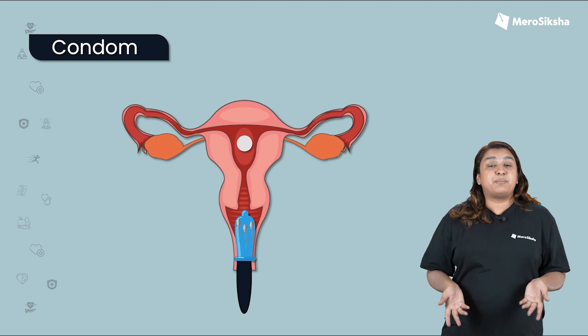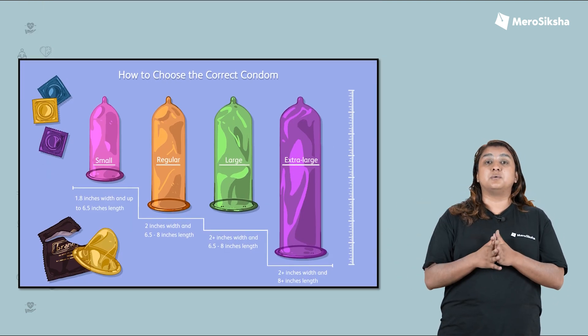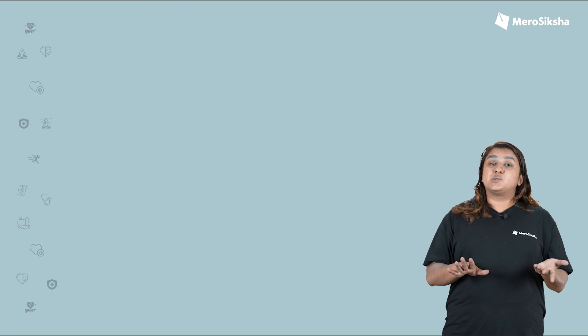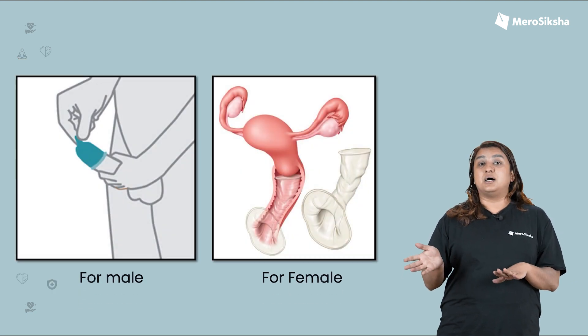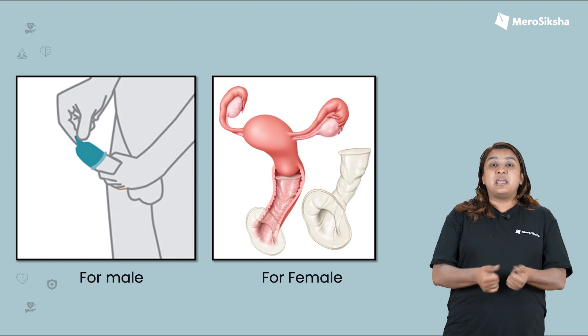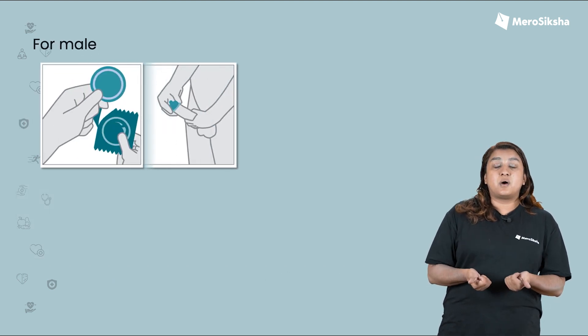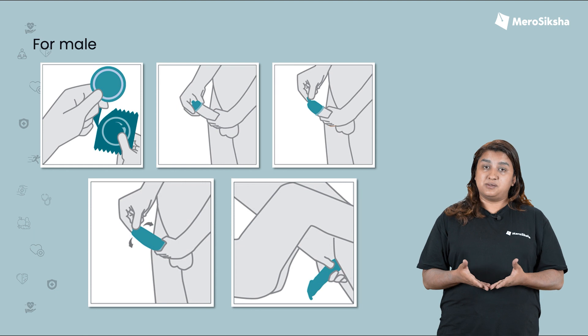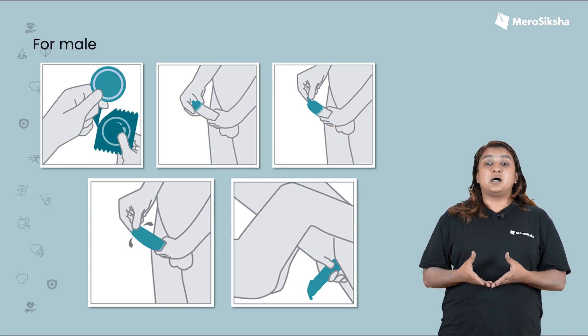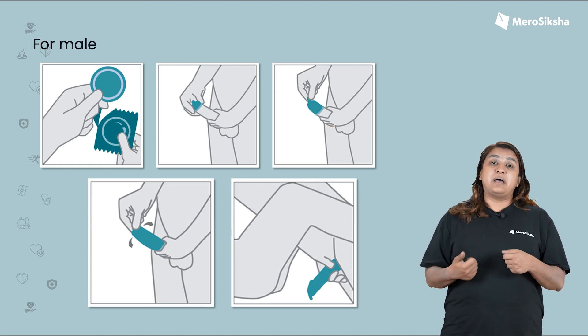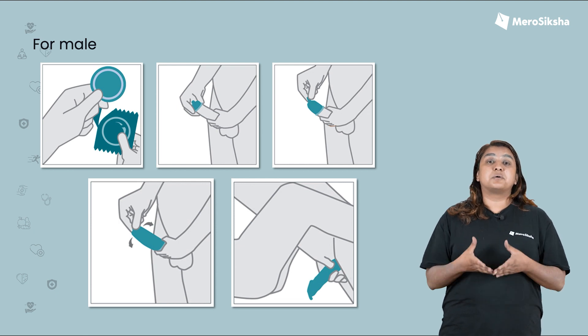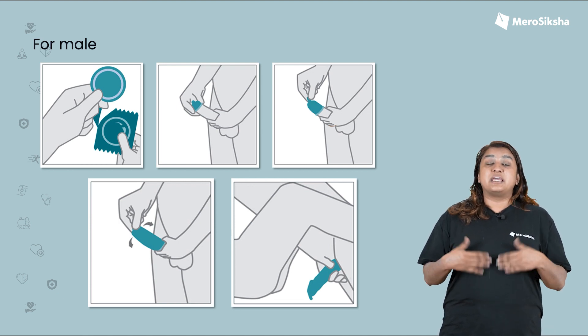Condoms come in different shapes and sizes. We are learning about female condoms. A condom for females also works — it covers the female and, especially during ejaculation, the condom prevents semen from entering the uterus, thus preventing pregnancy.